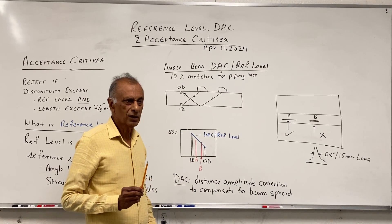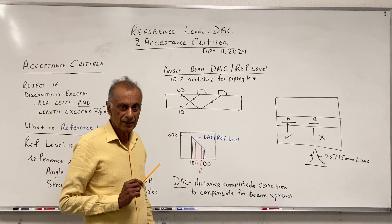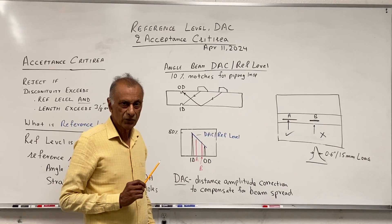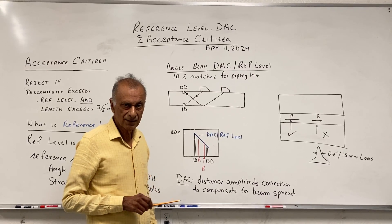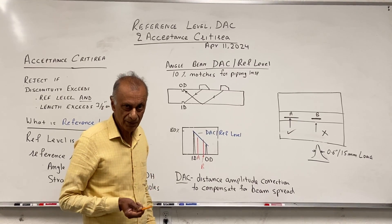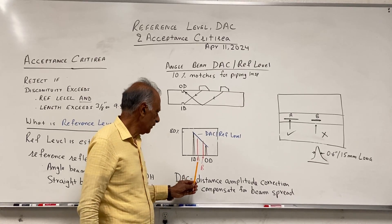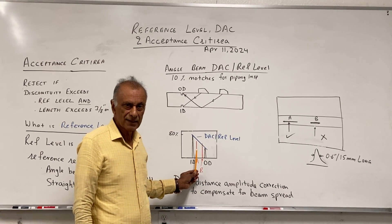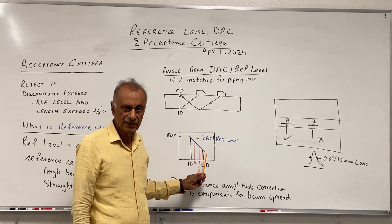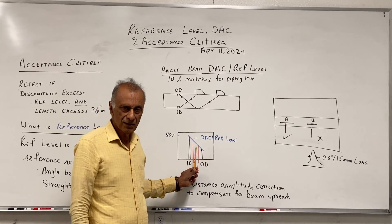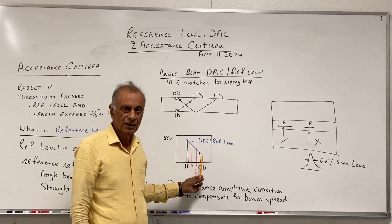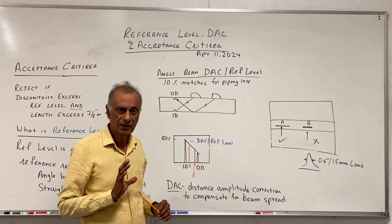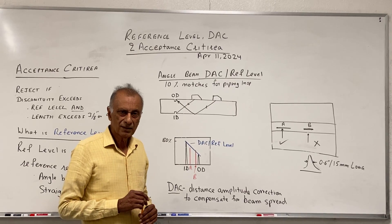What I wanted to show you was that you don't go by the absolute amplitude of the signal. You have to go by the relative amplitude of the signal relative to the reference level. In this example, signal B — which is smaller than signal A — is actually a reject, while A — which is larger than B — is an accept, because it is below the reference level. So make sure that we compare these signals to the reference level.